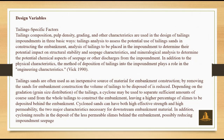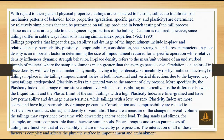Tailings sands are often used as an inexpensive source of material for embankment construction. By removing sand for embankment construction, the volume of tailings to be disposed of is reduced. Depending on the gradation and grain size distribution of the tailings, a cyclone may be used to separate sufficient amounts of coarse sand from the full tailings to construct the embankment. Cyclone sands can have both high effective strength and high permeability — the two major characteristics necessary for downstream embankment material.